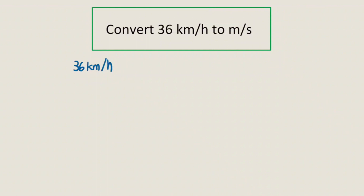Next, we'll convert 36 kilometers per hour to meters per second. So 36 kilometers per hour can be thought of as an object moving 36 kilometers every one hour. We can visualize this as 36 kilometers divided by 1 hour, and we'll convert the kilometers and hours to meters and seconds respectively.